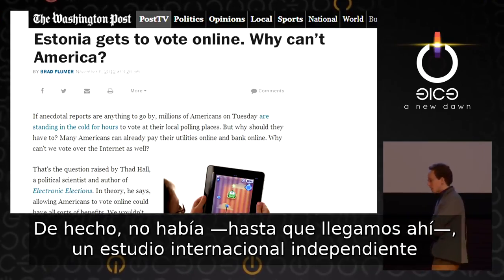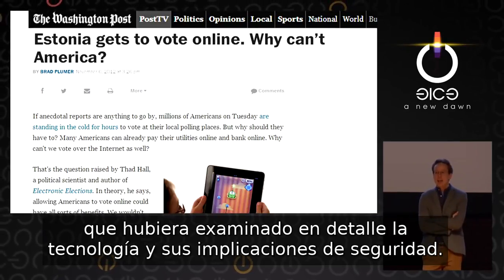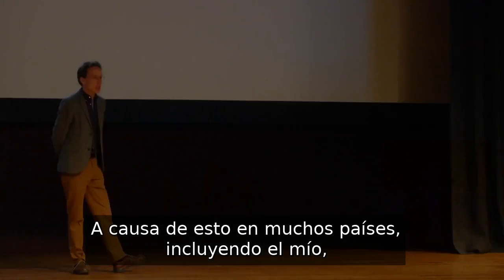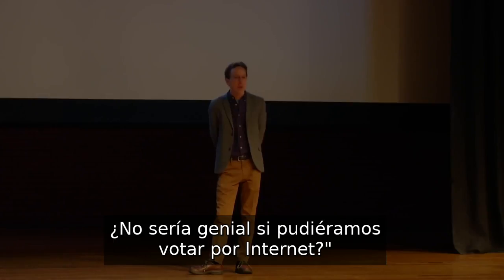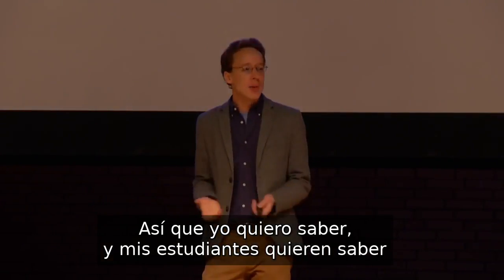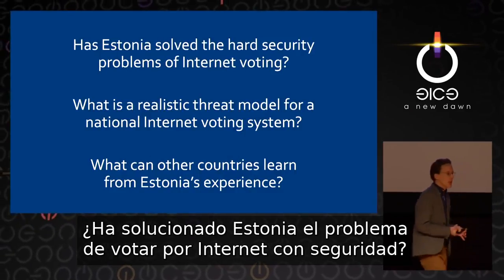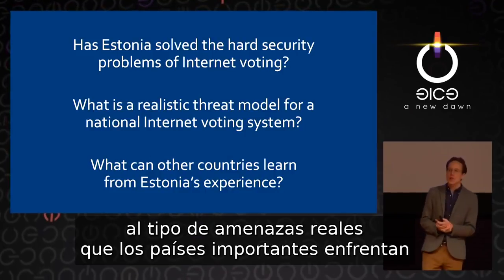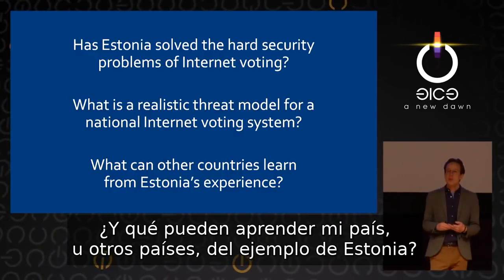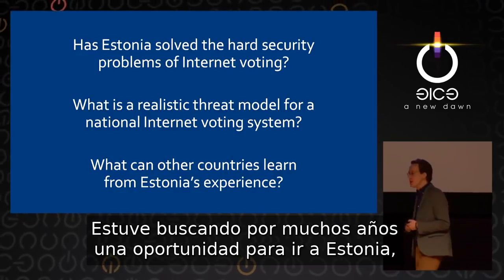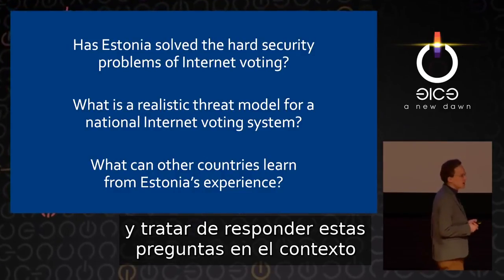Whether the Estonian system is secure was a question that had not been adequately answered. There was no independent international study that examined in detail the technology and its security implications. Because of this, many other countries — including my own — had people looking around saying, 'Estonia is voting online, why can't we do that?' I wanted to know, and my students wanted to know: has Estonia actually solved the problem of voting online securely? Have they defined their system to answer the kinds of realistic threats that major countries face in conducting elections?